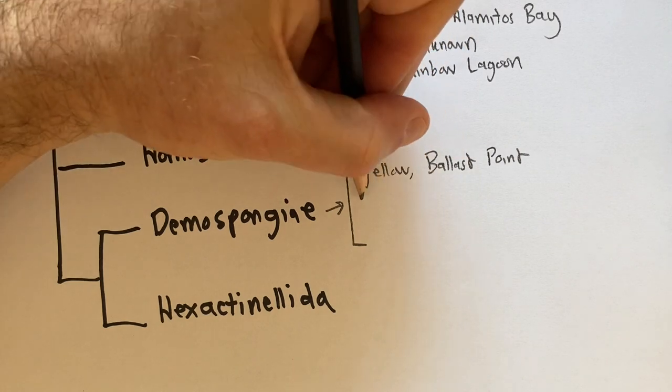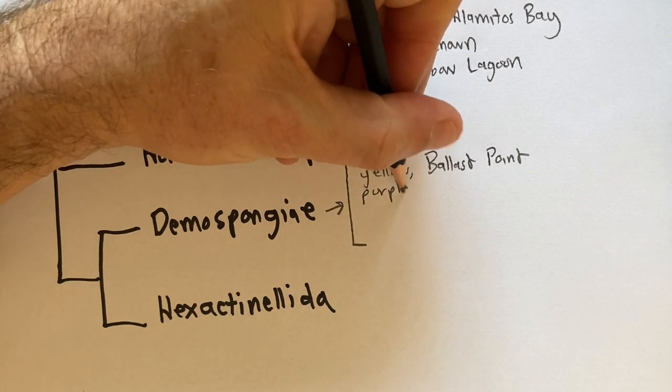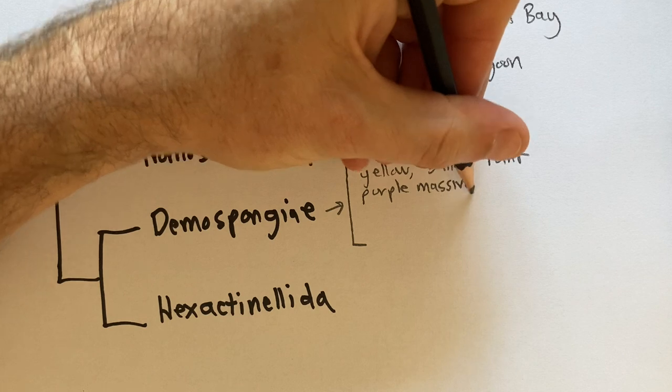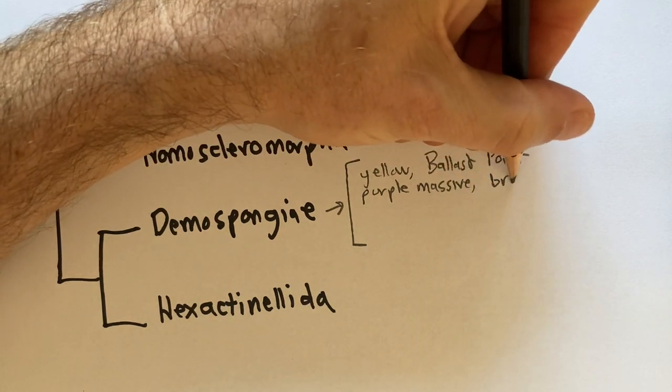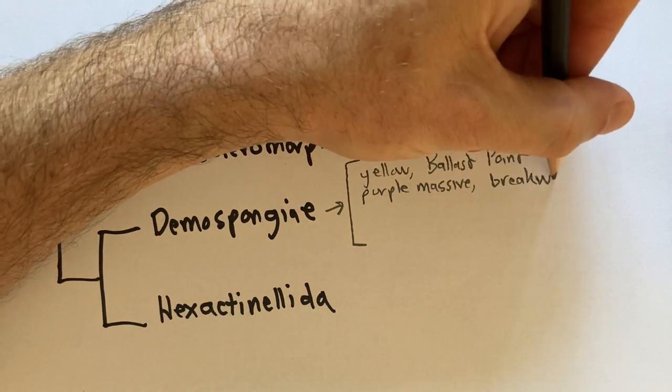Here's another sponge whose name I don't know, a massive purple sponge from the shallow subtidal zone, collected from the Long Beach breakwall by a snorkeler. So not too deep, probably just a few meters.